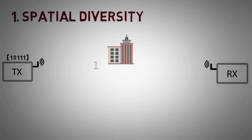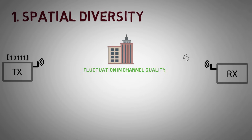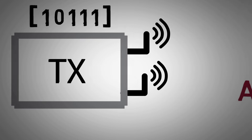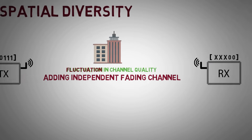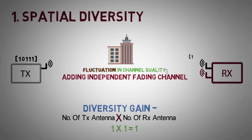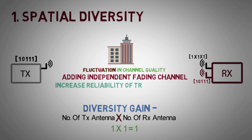Consider a system where a data stream 10111 is transmitted through a channel with deep fades. Due to fluctuation in the channel quality, the data stream may get lost or severely corrupted such that the receiver cannot recover it. The solution to combat the rapid channel fluctuation is to add independent fading channels by increasing the number of transmitting antennas, receiving antennas, or both. In brief, spatial diversity techniques send or receive the same information across independent channels to combat fading. Here, diversity gain is defined as the number of transmitting antennas multiplied by the number of receiving antennas. Let us increase the number of receiving antennas by one. The chances of proper delivery of the data across two links is very high, and the additional fading channel increases the reliability of the overall transmission. Here diversity gain is 1 x 2 which equals 2.